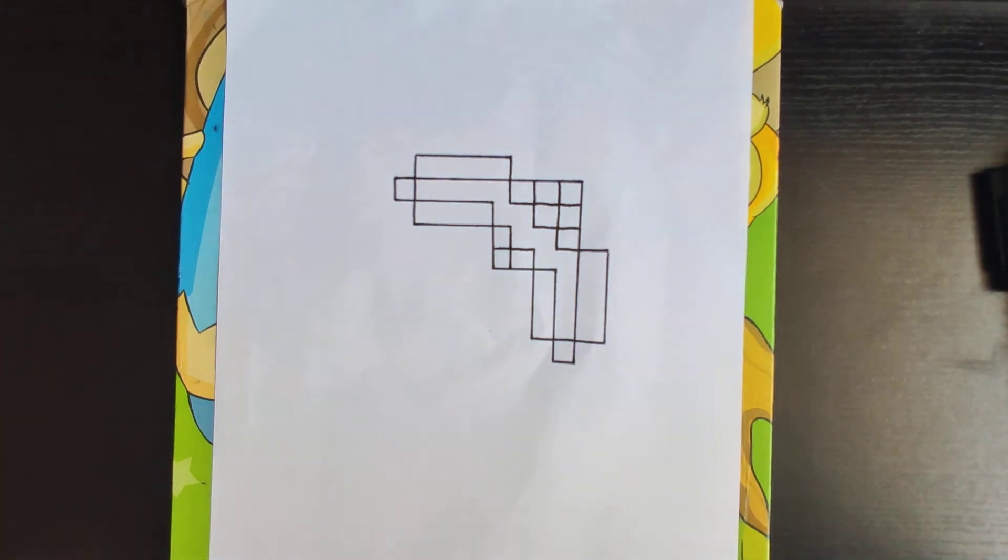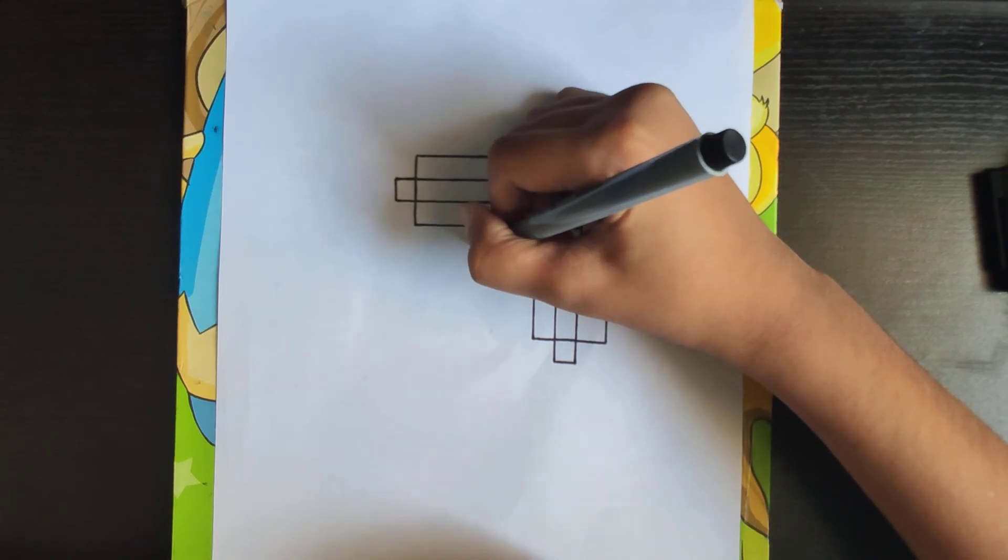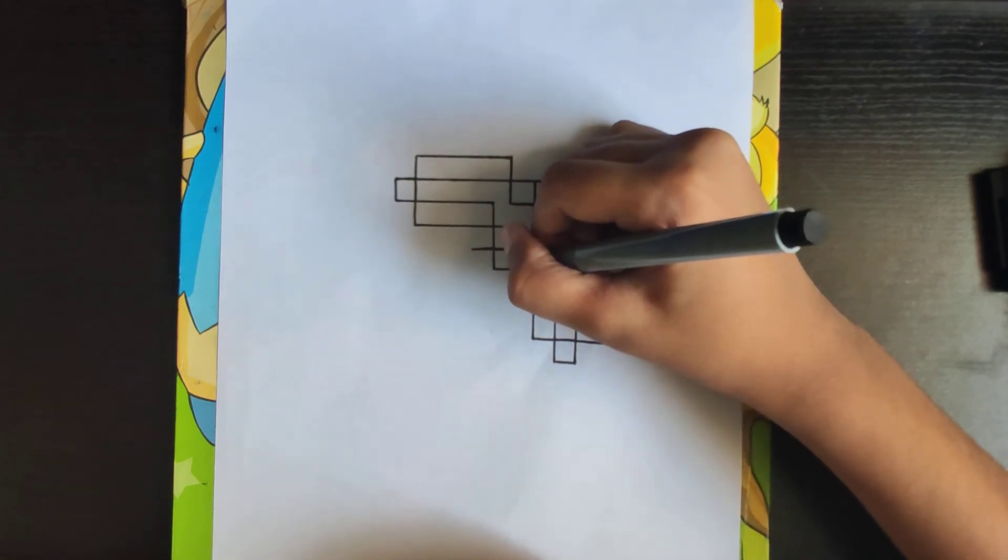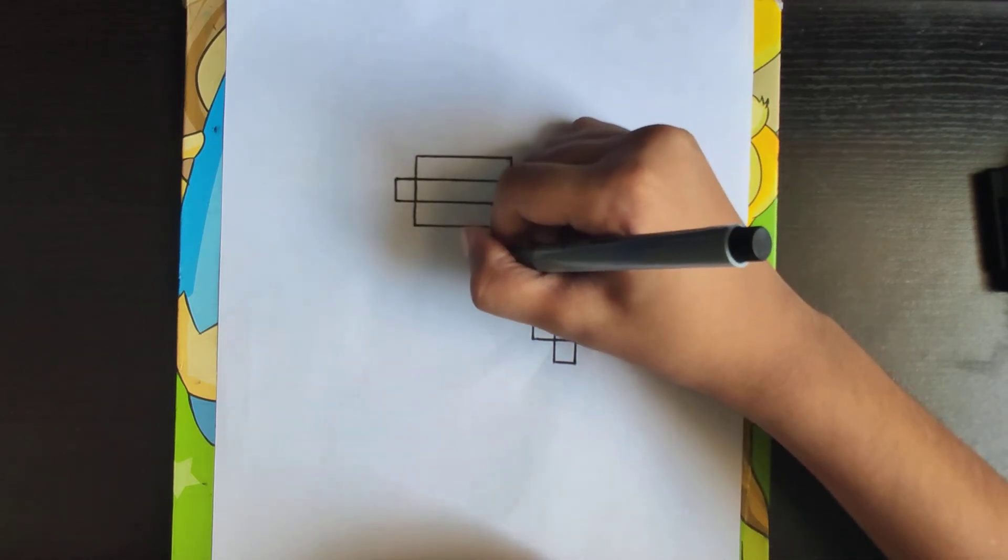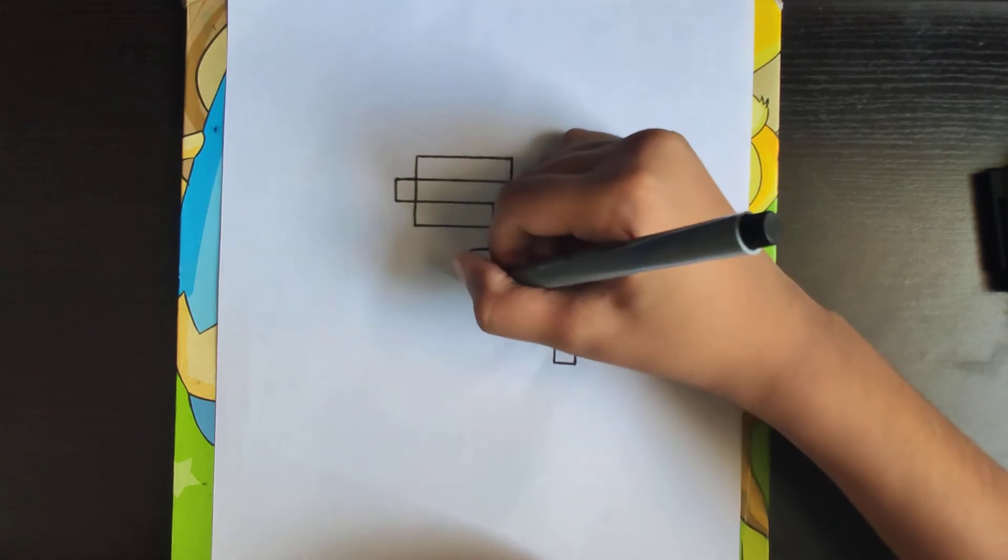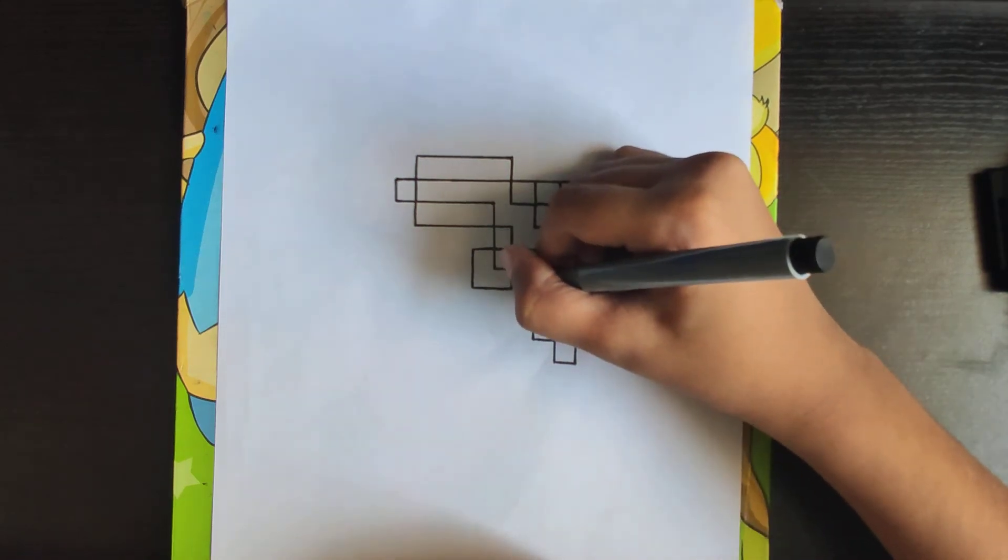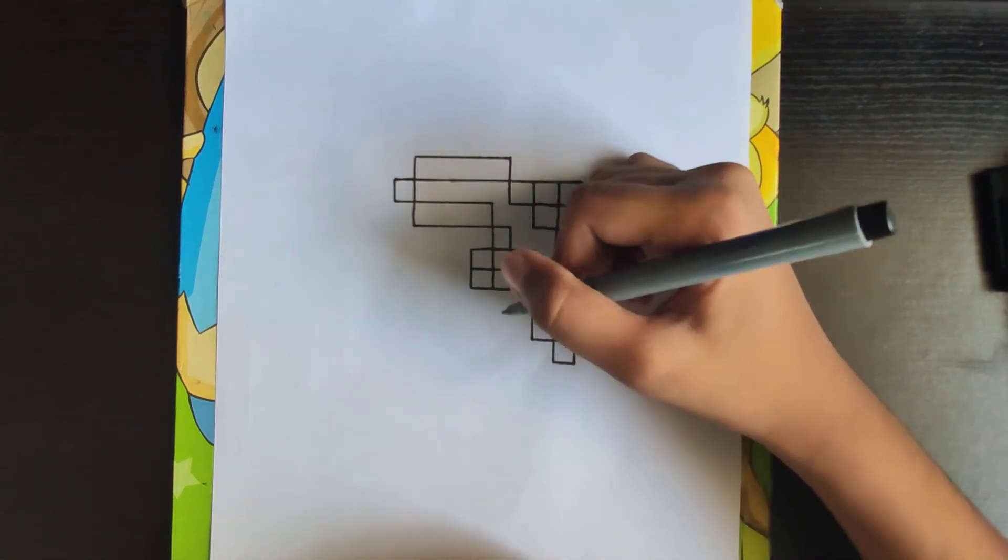Now I'll tell you the bottom part. Make a line in here, continuing with this line. Right here. Another one, and then join two lines like this to make a box.